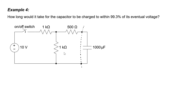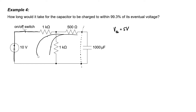Therefore, the Thevenin equivalent voltage shows up across the 1 kilohm resistor, and it's just 5 volts because the 10 volts is divided evenly across the two 1 kilohm resistors. For the Thevenin equivalent resistance, I zero out the 10 volt source, making it a short circuit. The two 1 kilohm resistors are then in parallel, making 500 ohms, and that's in series with the other 500 ohm resistor. 500 plus 500 gives a Thevenin equivalent resistance of 1 kilohm.